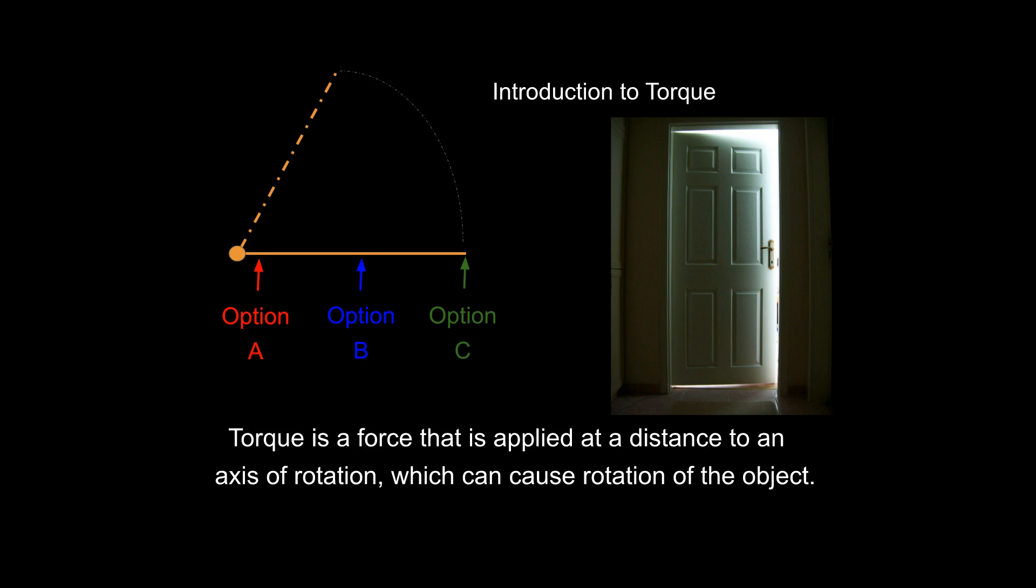In your everyday life, you already know that it makes sense if we want the ability to rotate an object. It matters where we apply that force. And the greater the distance from the axis of rotation, from this axis right here, the greater the ability we have to rotate an object.